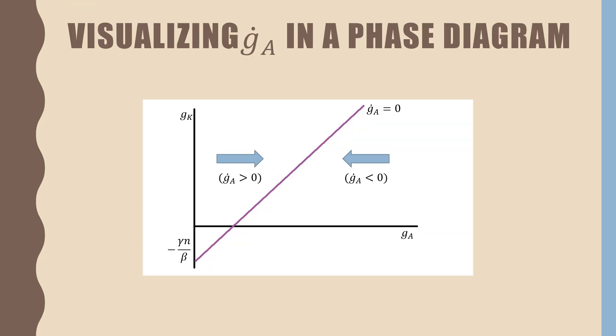In terms of visualizing this on a phase diagram again, this line is our growth rate transition equation for technology where it is equal to zero. If we're on the left side of it, we're going to tend towards this line. And if we're on the right side of this line, we're going to tend towards line again. This is showing all the steady points along this line. And again, just note that negative gamma N over beta is our intercept.